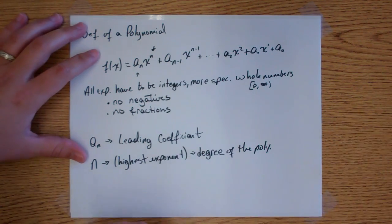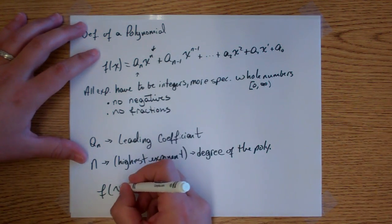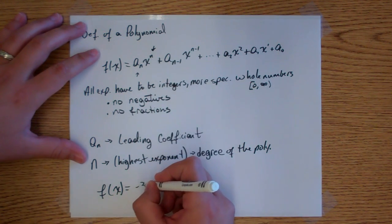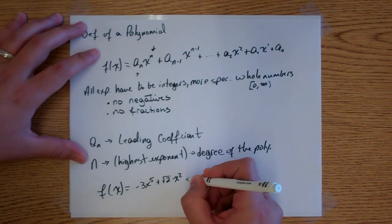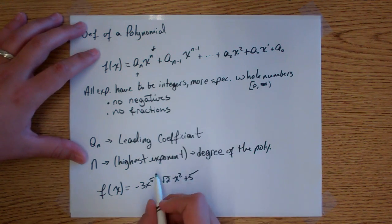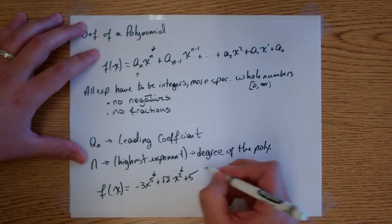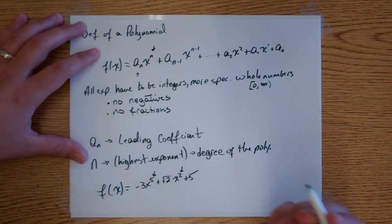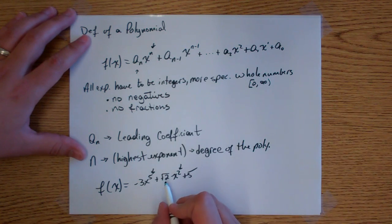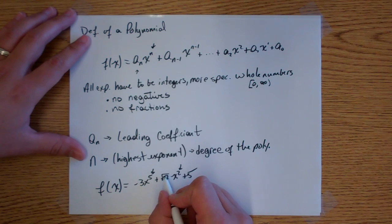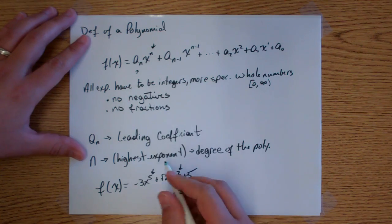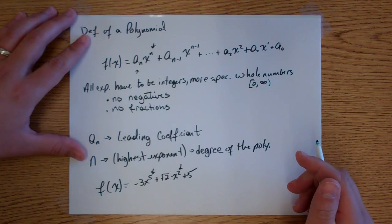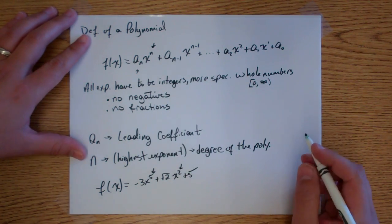So a couple of examples of polynomials. We have f of x equals negative 3x to the fifth plus the square root of 2 times x squared plus 5x. The exponents are whole numbers. The square root of 2 is the coefficient — it doesn't matter that it would have a fractional exponent, since it is not the exponent of the variable. Only the exponents of the variables have to be whole numbers.